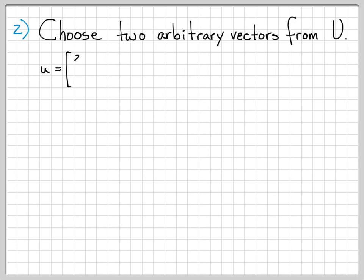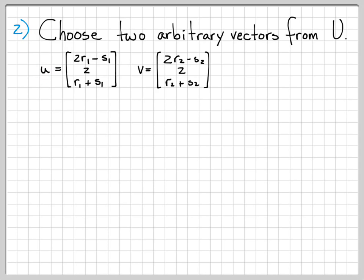Let's look at the second property. I'll choose two arbitrary vectors from U, denoting them u and v. I've chosen arbitrary values r1 and s1 to construct vector u, and arbitrary values r2 and s2 to construct vector v. So I've chosen two very arbitrary vectors in the set U that both have the required form. Let's compute what u plus v equals.